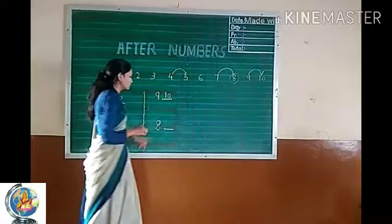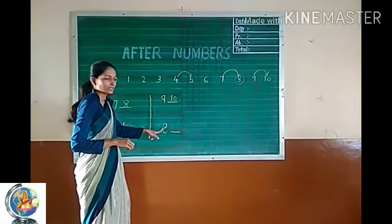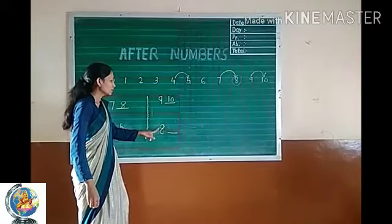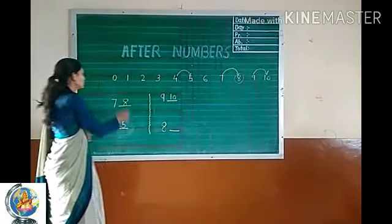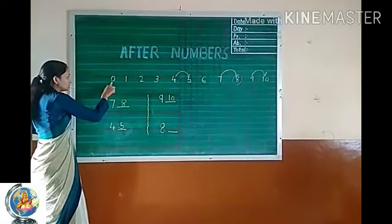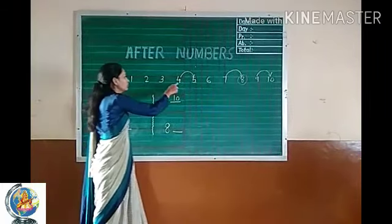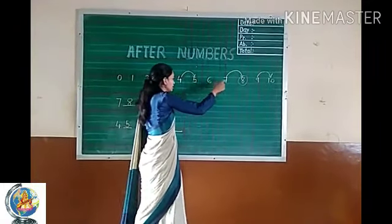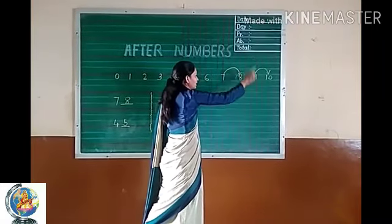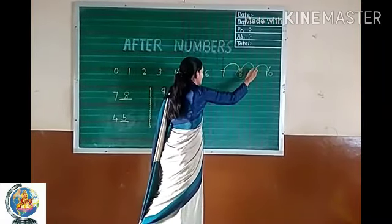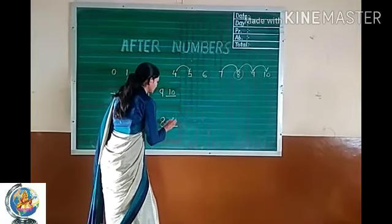Which number is this? Number 8. Count: 0, 1, 2, 3, 4, 5, 6, 7, 8 and 9. After 8 is 9. So write number 9 here.